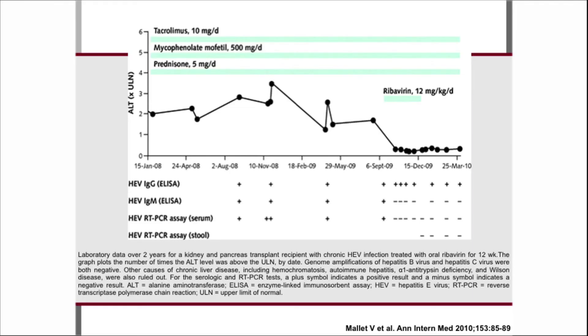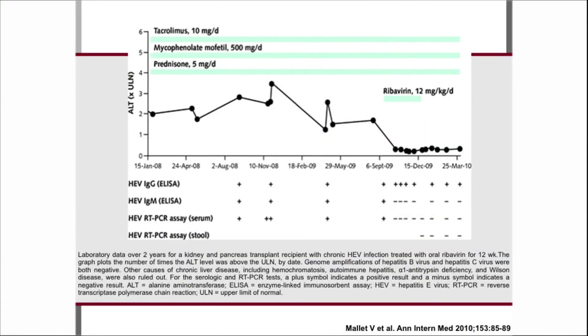Chronic hepatitis E has been described in transplant patients and — with more question marks — in HIV patients. A case from Vincent Mallet in Paris: a kidney transplant patient developed ALT elevation that couldn't be explained; retrospectively, hepatitis E PCR positivity was found, and the disease was definitely not self-limiting. They treated this patient with ribavirin, which seemed to work. Other case reports also show ribavirin can cure hepatitis E in immunocompromised patients, making it a viable treatment option when you encounter such a case — and it's a usually easily accessible drug. Thank you for listening.